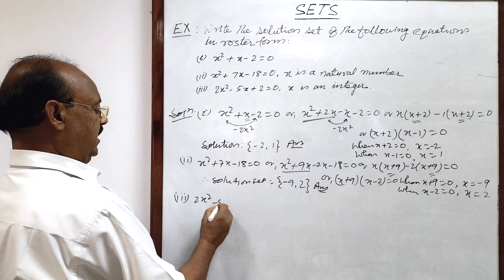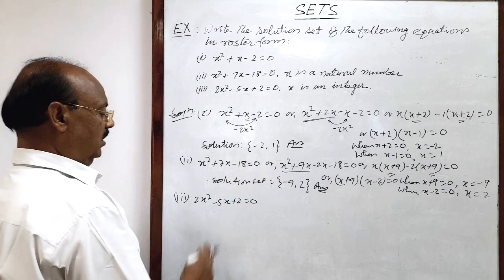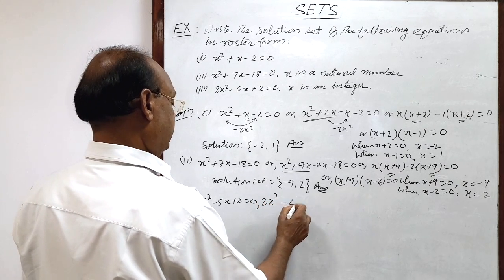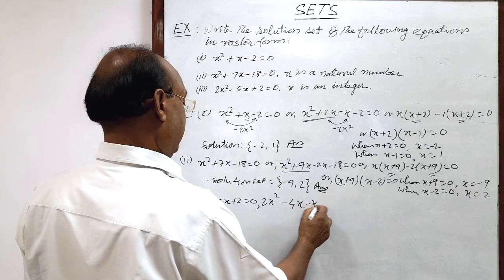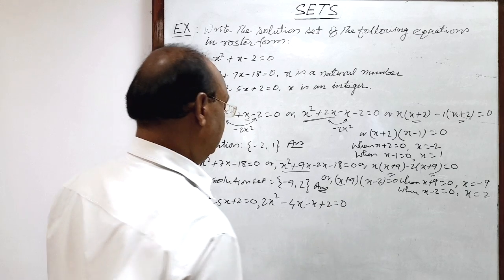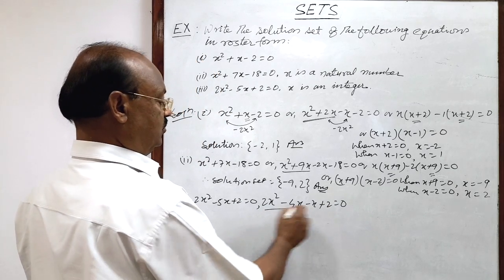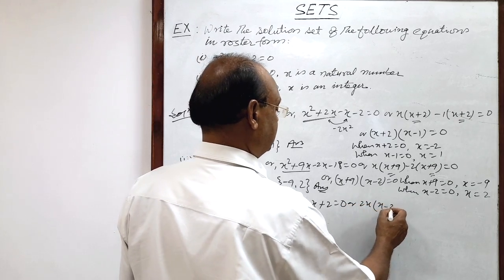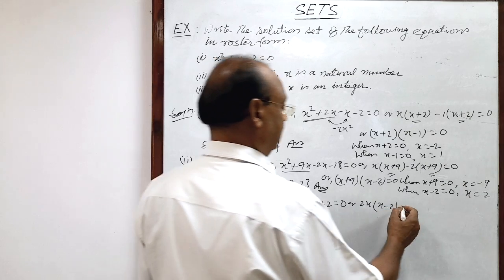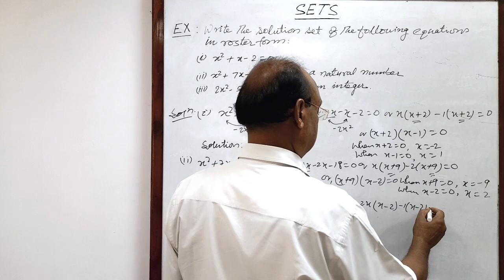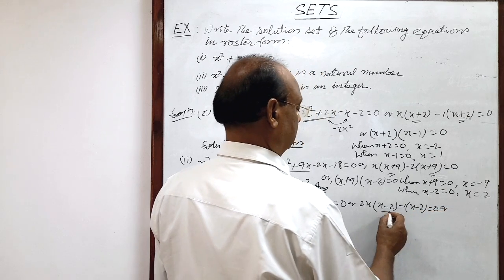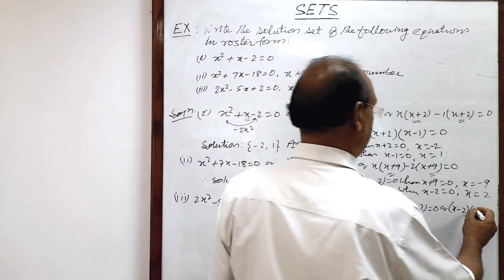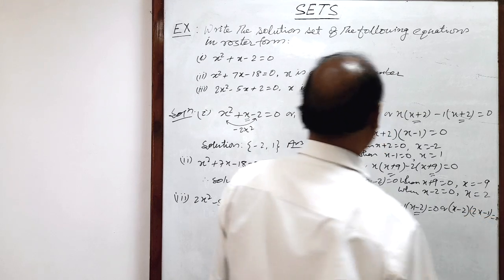For the third question, two x squared minus five x plus two equals zero. Splitting the middle term: two x squared minus four x minus x plus two equals zero. Taking two x common from the first two terms gives two x(x minus two), and taking minus one common from the last two terms gives minus one(x minus two). So (x minus two)(two x minus one) equals zero.